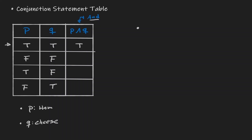In the next row, it is false that I put ham and false that I put cheese — so you did not get your ham and cheese sandwich. Therefore the 'and' statement is false. In the third row, it is true that I put ham but false that I put cheese — you only got a ham sandwich, not what you asked for. Therefore the 'and' statement is false. In the last row, it is false that I put ham but true that I put cheese — you only got a cheese sandwich. Therefore the statement is false.